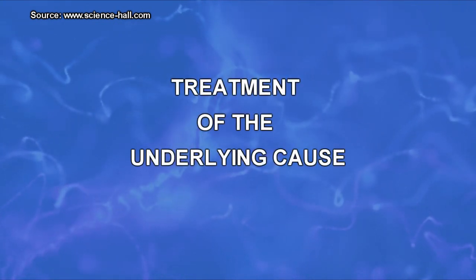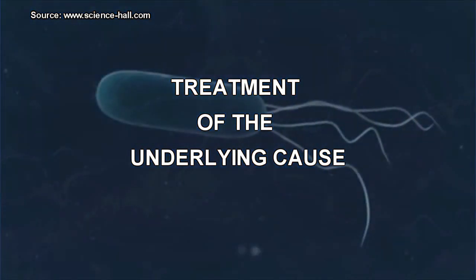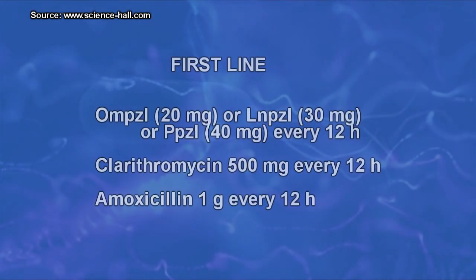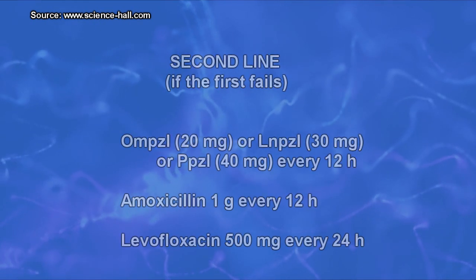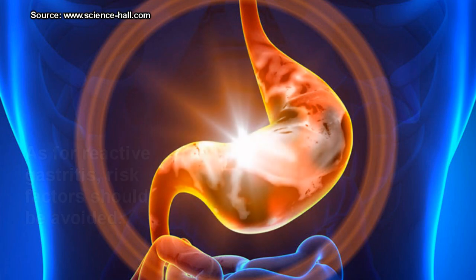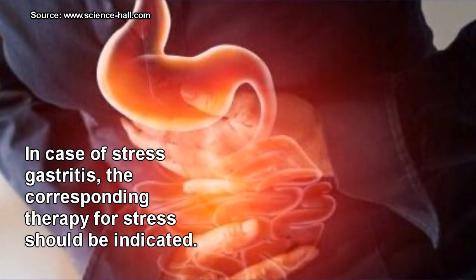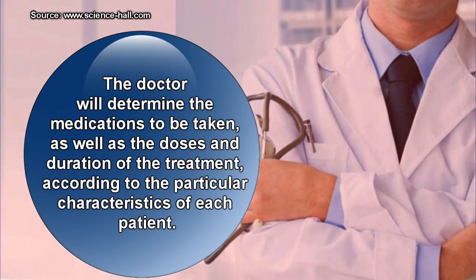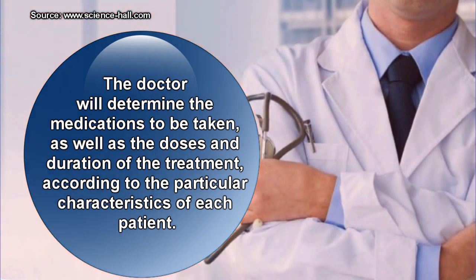Regarding treatment of the underlying cause: when gastritis is caused by Helicobacter pylori infection, one of several treatment schemes may be indicated — first line, second line, or third line. For reactive gastritis, risk factors should be avoided; for example, if caused by long-term use of non-steroidal anti-inflammatory drugs, they should be discontinued. In case of stress gastritis, the corresponding therapy should be indicated. In all cases, the doctor determines the medications, doses, and duration of treatment.